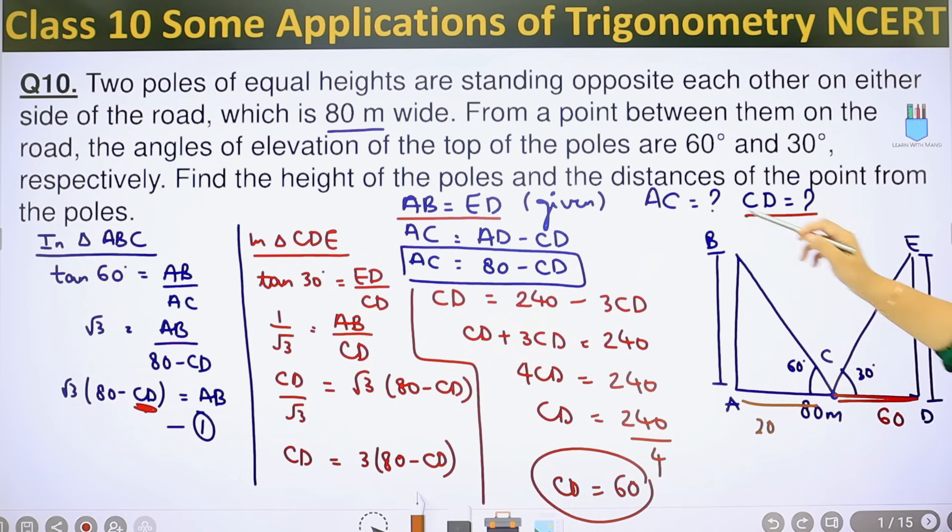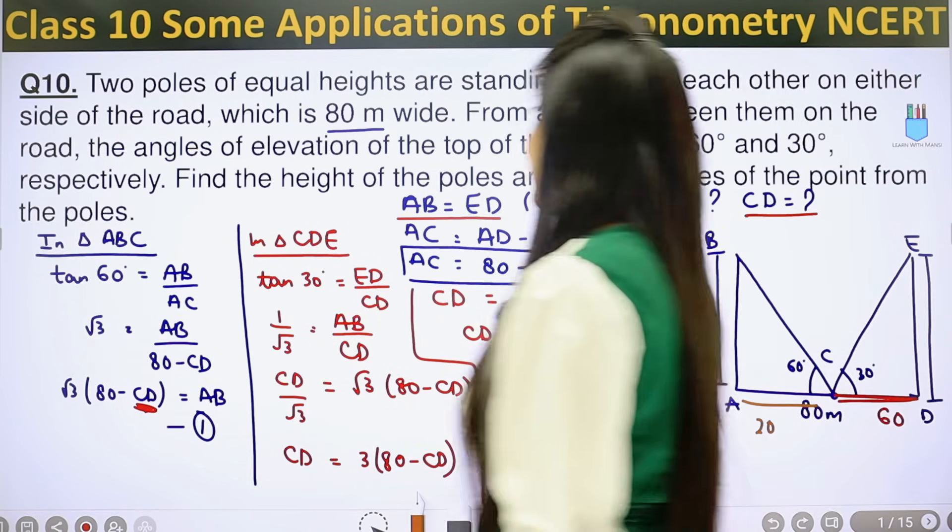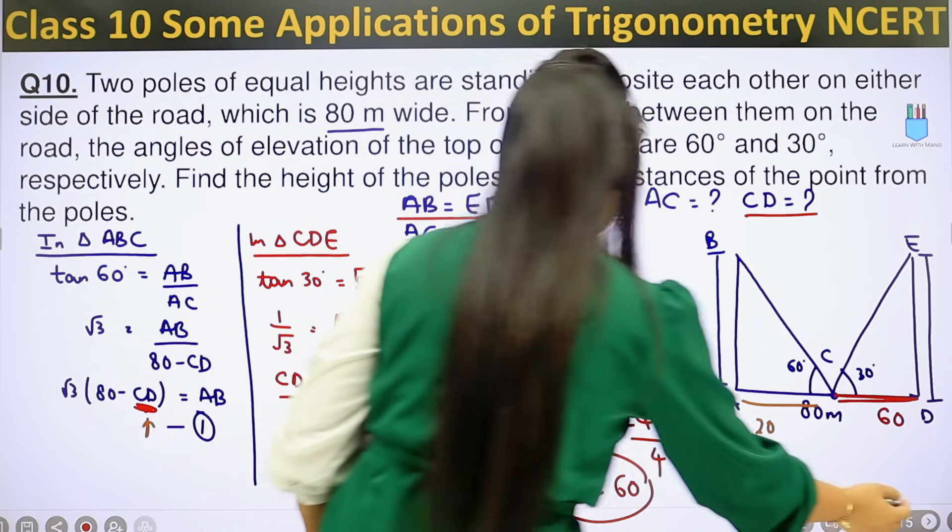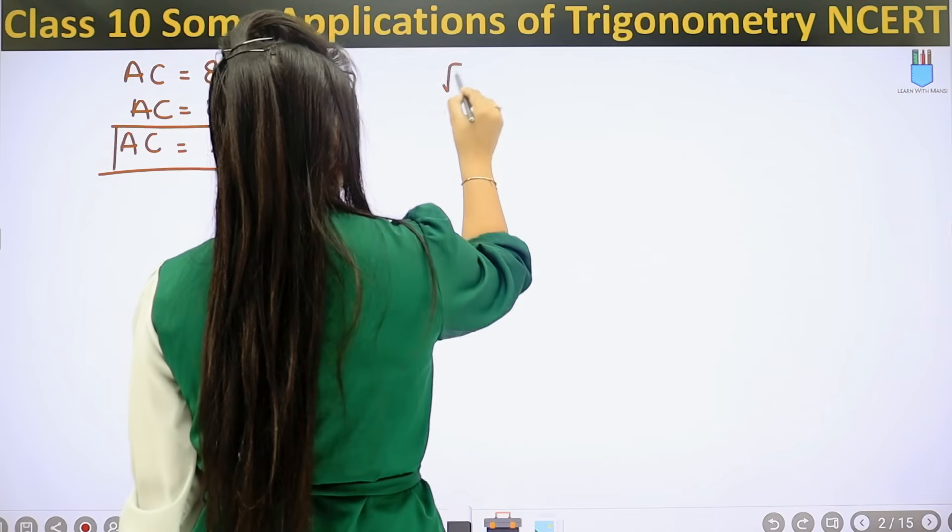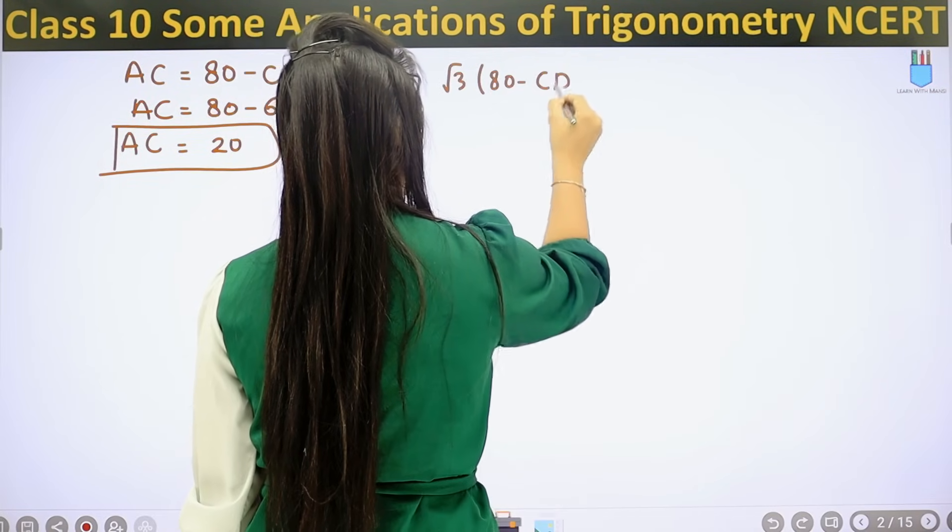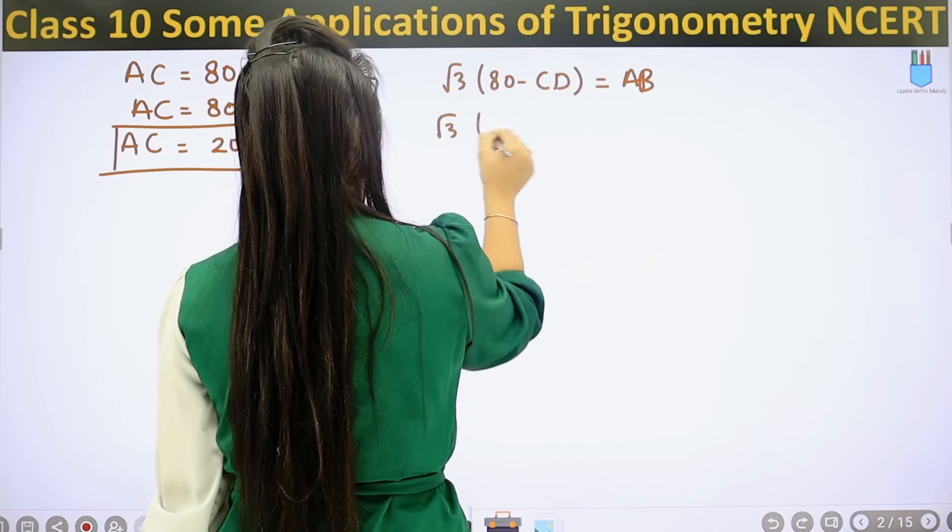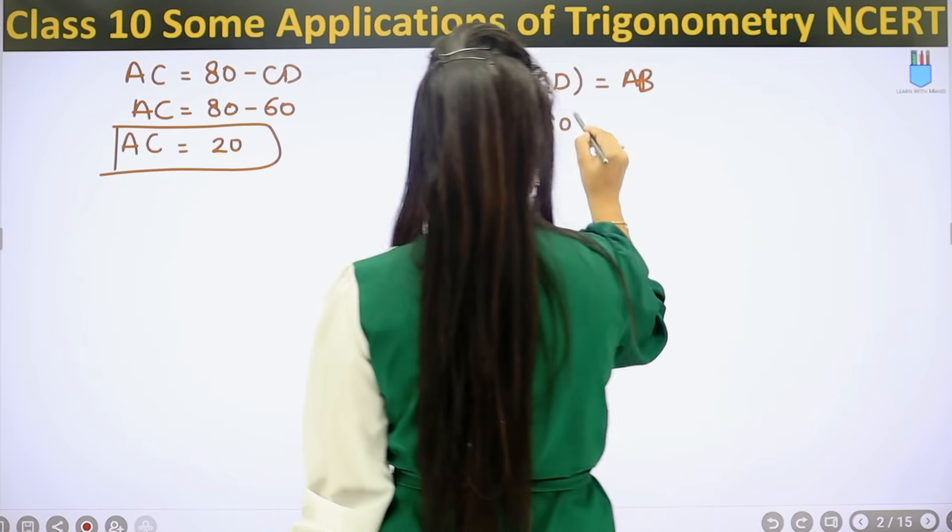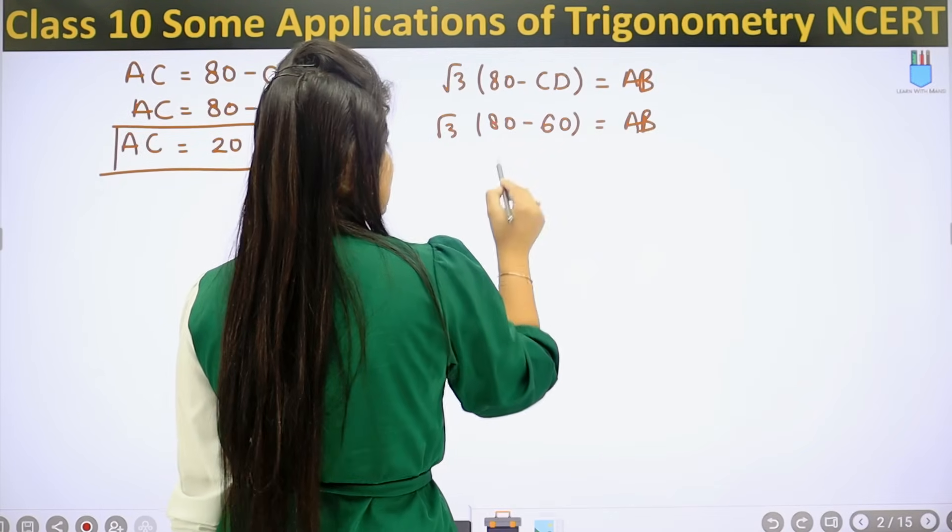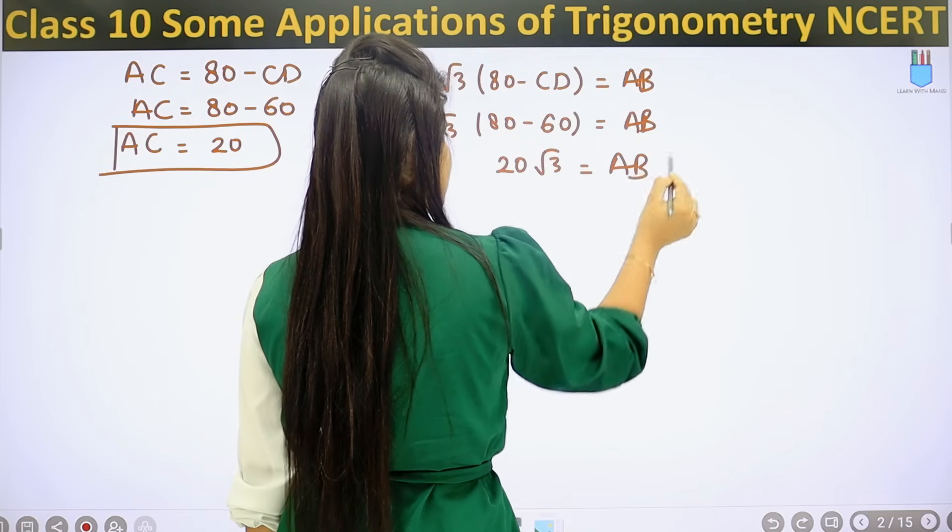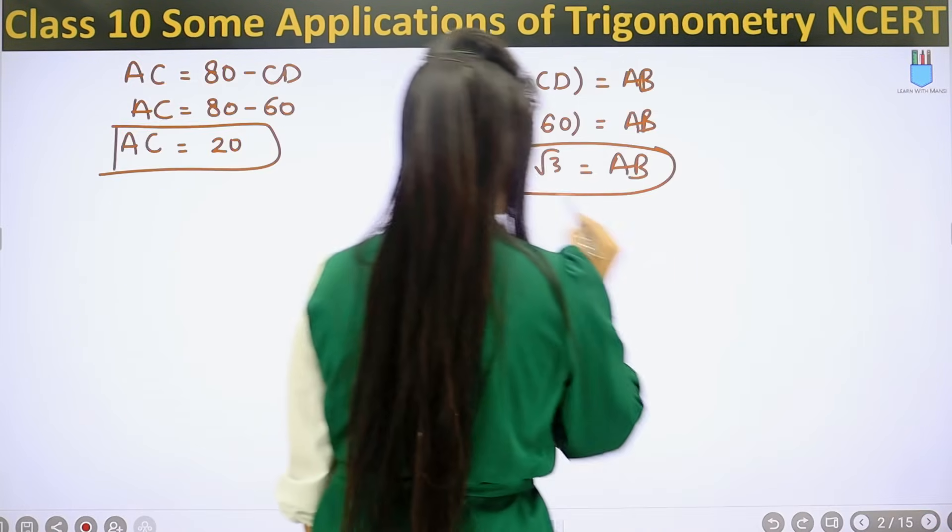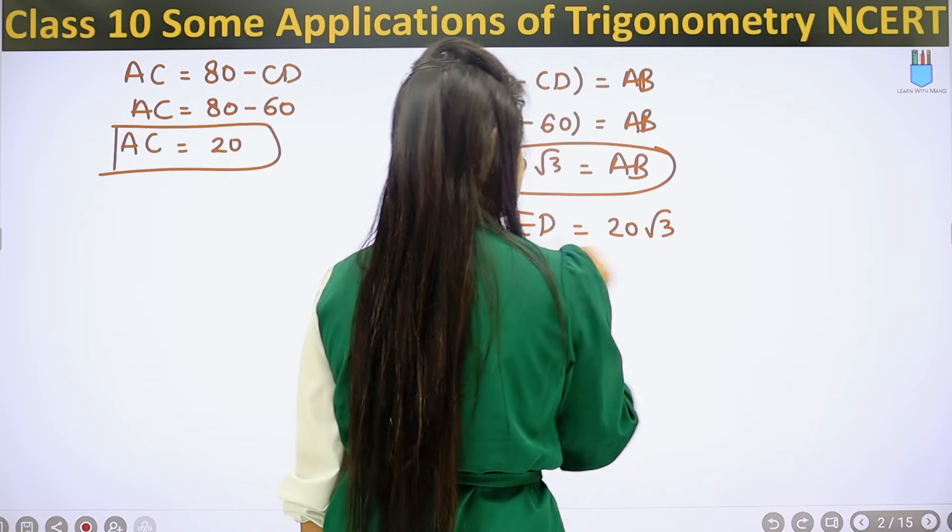So CD is 60. We found this is 20. One more thing we found, that is height of the pole. We need to find AB or ED. We know both are equal. I have AB here. If I put the CD value, AB will also come. We have root 3 bracket 80 minus CD equals AB. So this is root 3 times 80 minus CD. CD is 60. So this becomes 60 equals AB. This will be 80 minus 60, which is 20, times root 3 equals AB. Since the poles are the same, ED is also equal to 20 root 3.